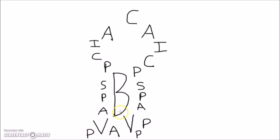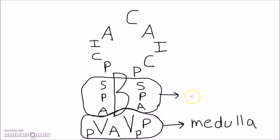Next, I'm going to circle the arteries that supply the medulla. And then, these arteries supply the pons and the midbrain.